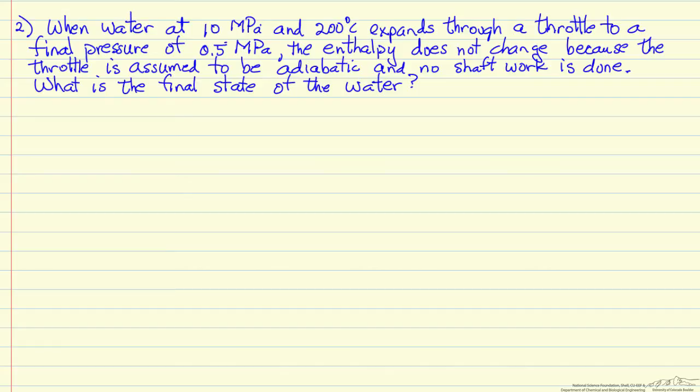And we know from first law of balance that the enthalpy doesn't change because we assume it is adiabatic, this is a fast process, there is not much time for heat transfer, and there is no moving parts, so there is no shaft work. The question is, what is the final state of the water?